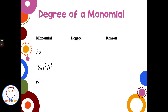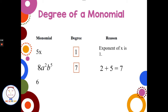Let's find the degree of these three monomials: 5x, 8a²b⁵, and 6. For 5x, the exponent on x is 1, so the degree is 1. For 8a²b⁵, we add the exponents 2 and 5 to get a degree of 7. For 6, there are no variables, so the degree is zero — that's a non-zero constant.